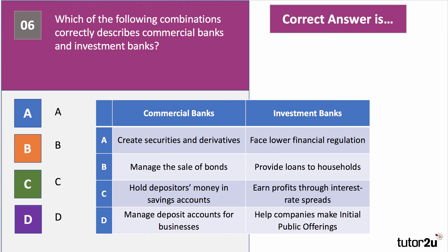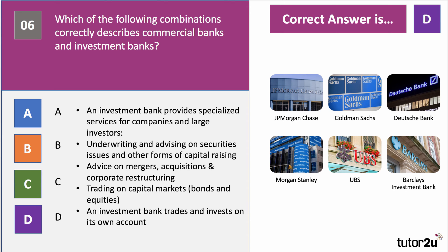The answer to question 6 is D. Commercial banks manage deposit accounts for businesses. Investment banks crucially help companies make initial public offerings when launching on the stock market — for example, Spotify recently launched on the US stock market. Most companies bringing a stock market flotation use one of the big investment banks such as Goldman Sachs, Deutsche Bank or UBS. These banks differ from commercial banks because they trade and invest on their own account in capital markets — bonds, equities and similar instruments.